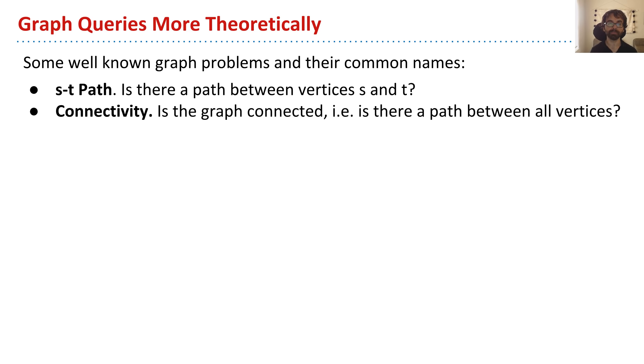There's the connectivity problem, which is, is a graph connected? That is, is there a way to get from every vertex to every other? So it's kind of a generalization of the s-t path problem. You consider all pairs of vertices, and if the answer to the s-t path is yes for all vertices, then the graph is connected.